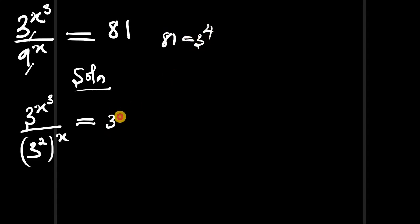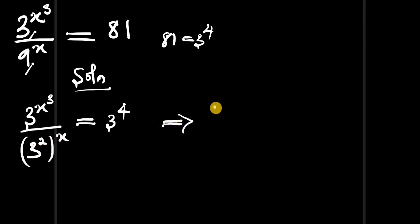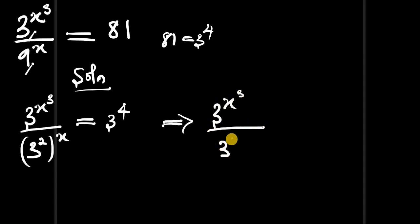So we have 3 to the power of 4. Right now we can multiply the exponent: 2 times x. So we are going to have 3 to the power of x cubed, divided by 3 to the power of 2x, and this is equal to 3 to the power of 4.